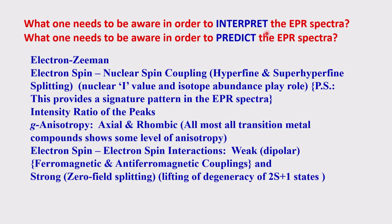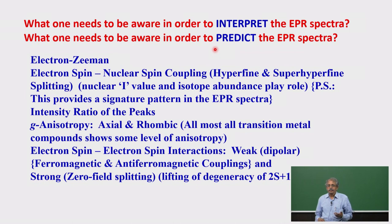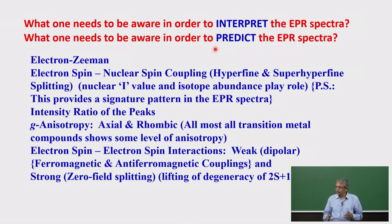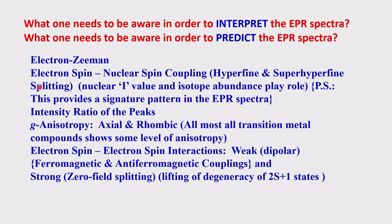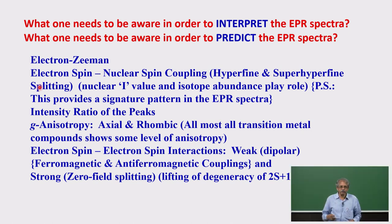What does one need to be aware of in order to interpret EPR spectra? What does one need to know in order to predict EPR spectra? You predict the EPR spectra by looking at the molecular structure, and given a spectrum, you work out the structure. These two things are interrelated. I have already explained: when you have a free electron placed into a magnetic field, it splits into +½ and −½, and that difference in energy depends on the magnetic field — this is known as the electron Zeeman effect. You bring about an electron transition using microwave power in the gigahertz range.